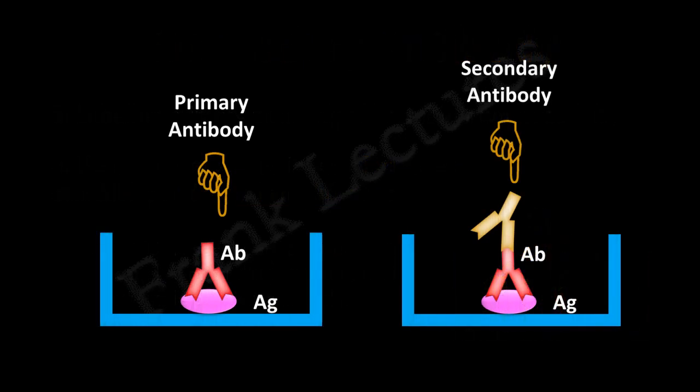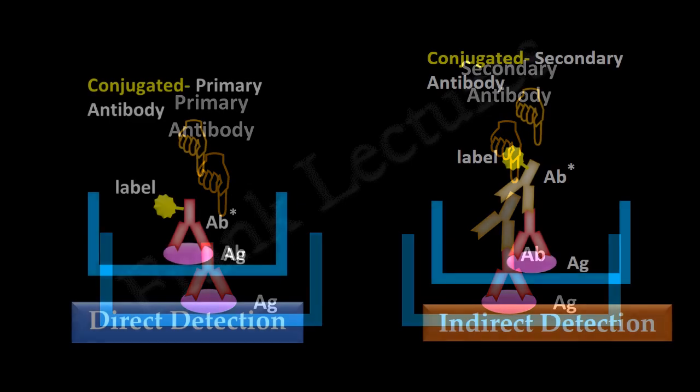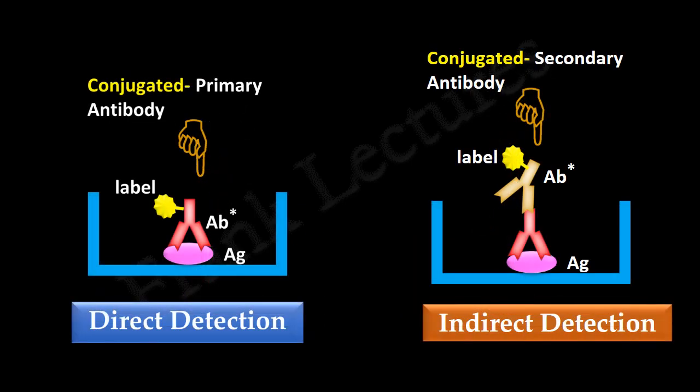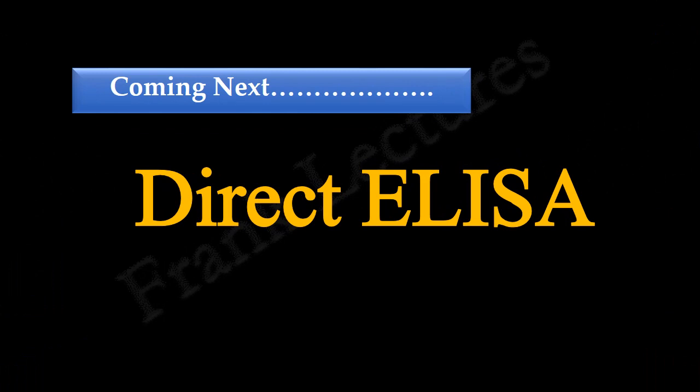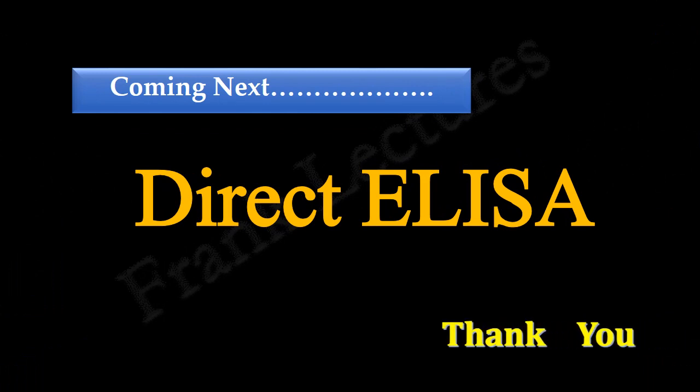At the end of this video lecture, we now understand the difference between primary and secondary antibodies, and direct and indirect detection. In the next video lecture, we will study direct ELISA. Thank you for watching.